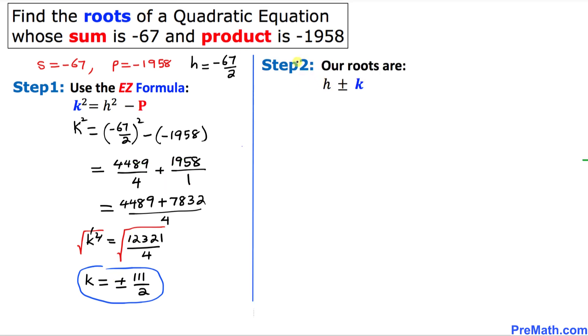And in our next step, this is our final step. Our roots are going to be H plus minus K. We know our H is negative 67 divided by 2 and K is plus or minus 111 divided by 2. And that is pretty much our answer. The only thing next we need to do is we have to split these numbers along these positive and negative signs.